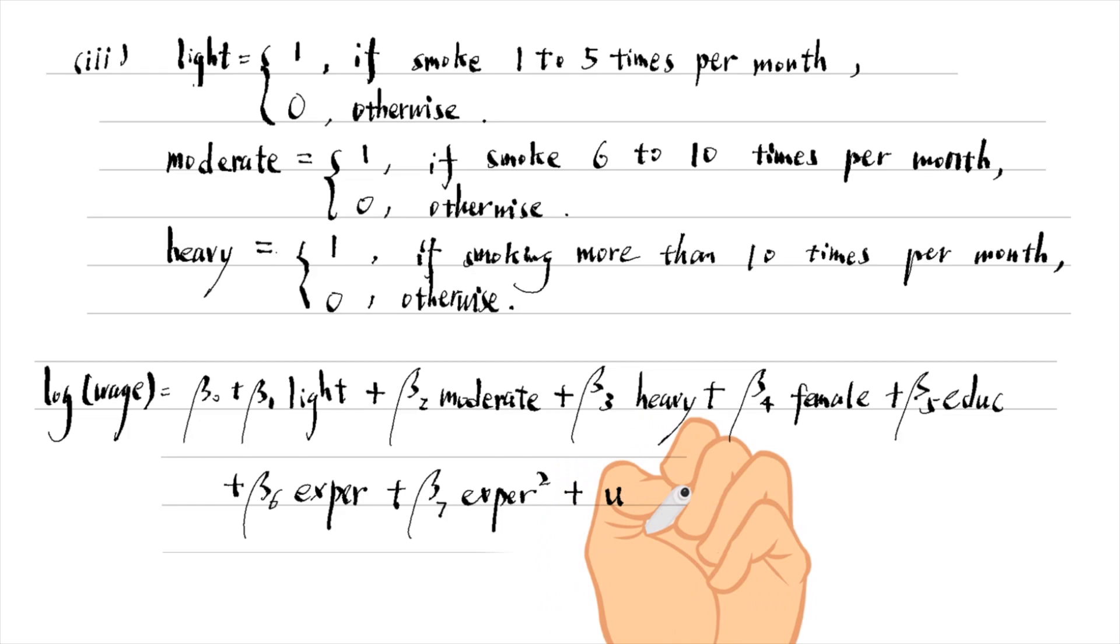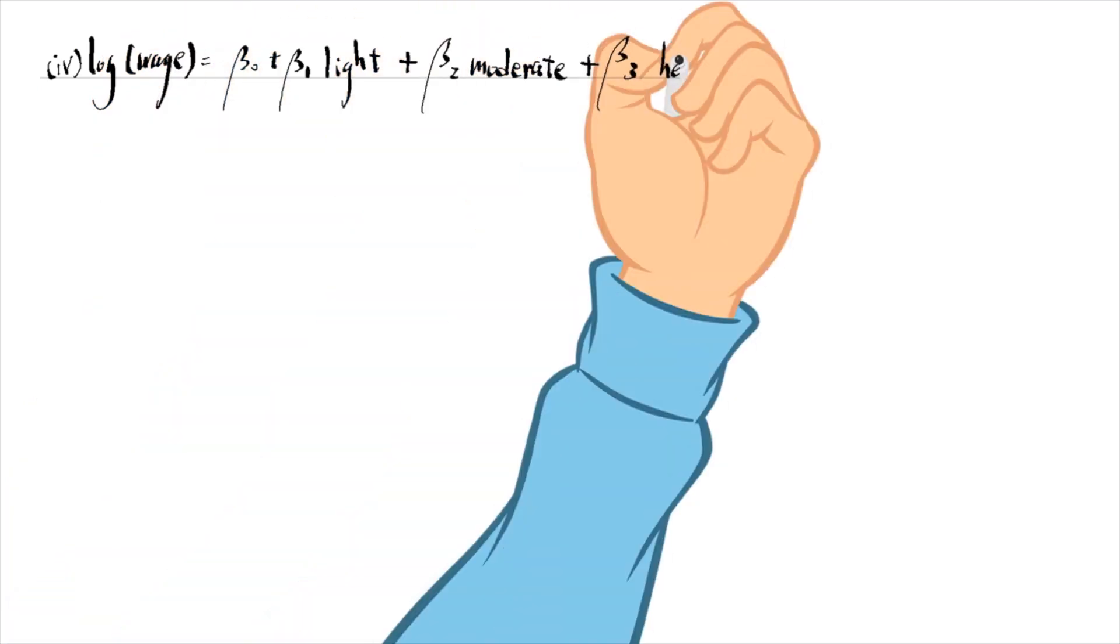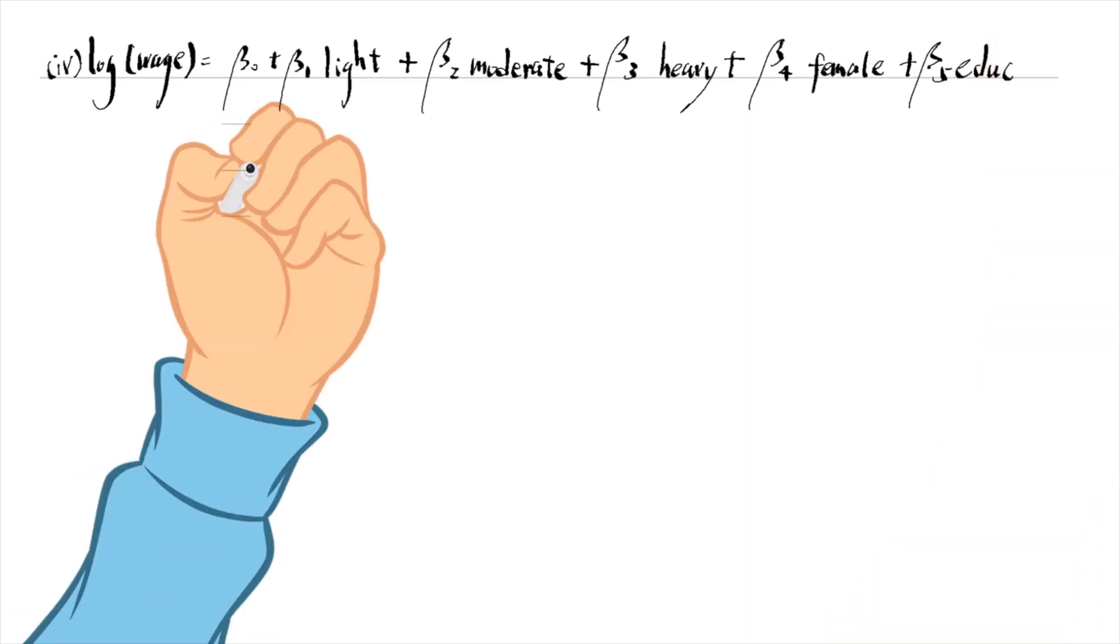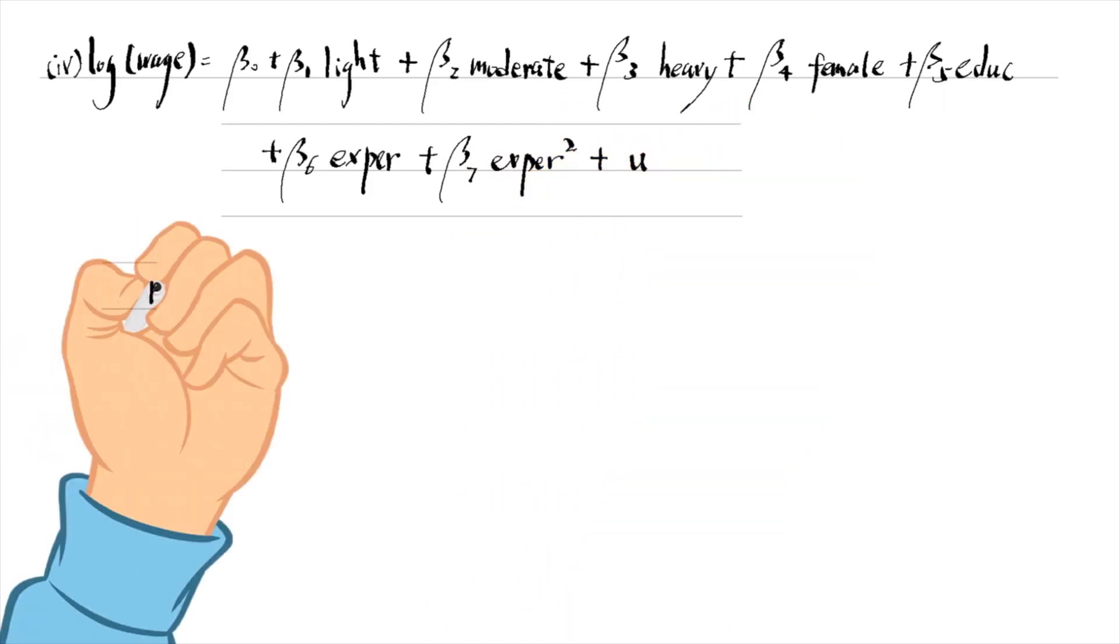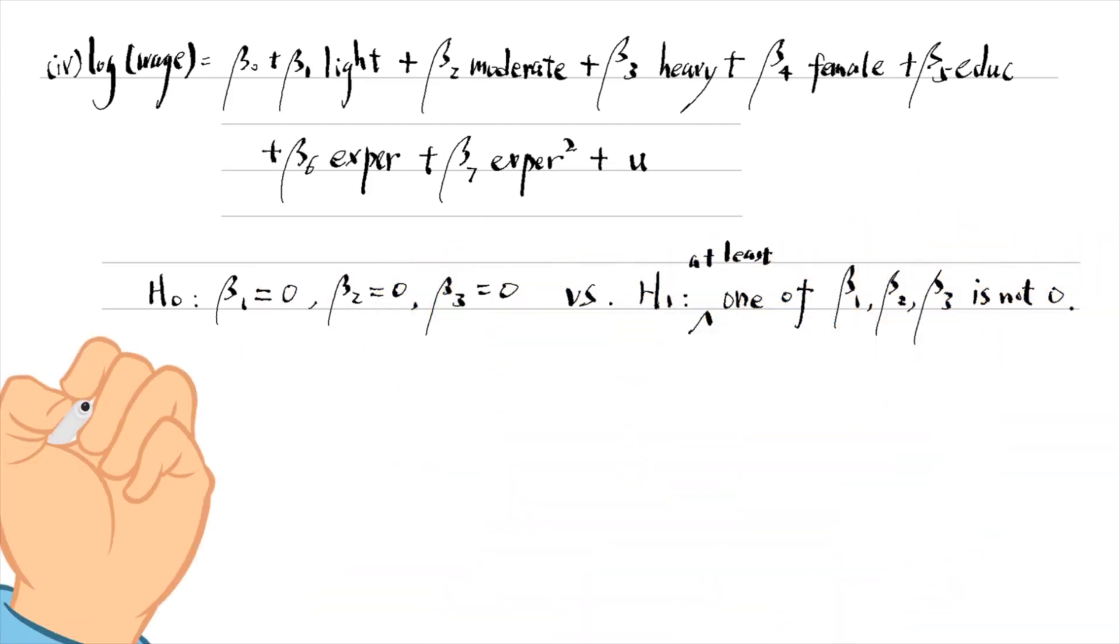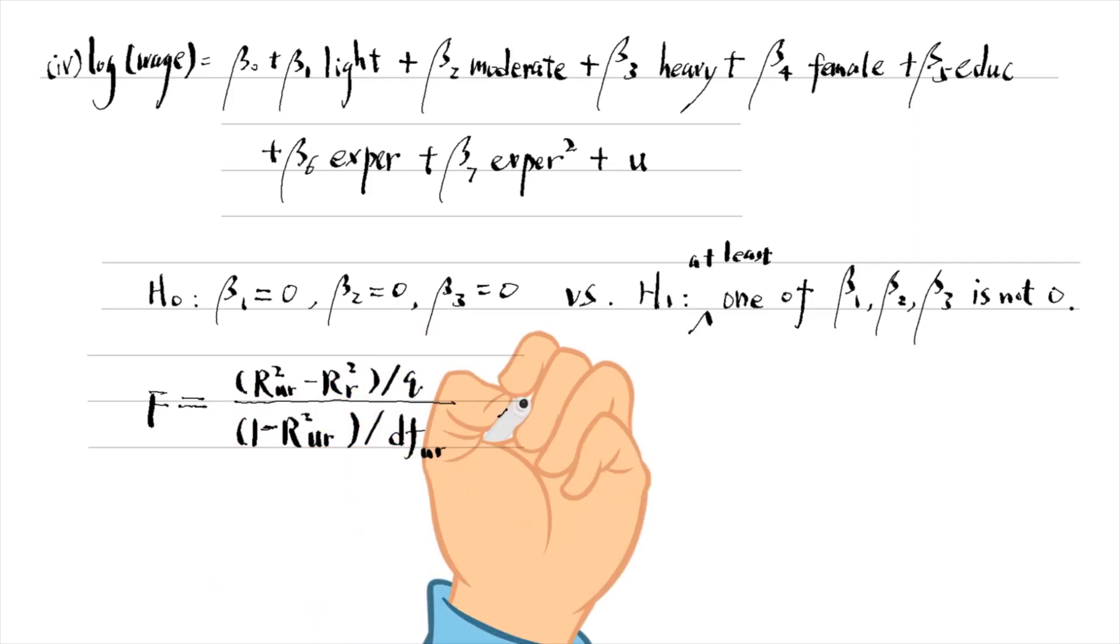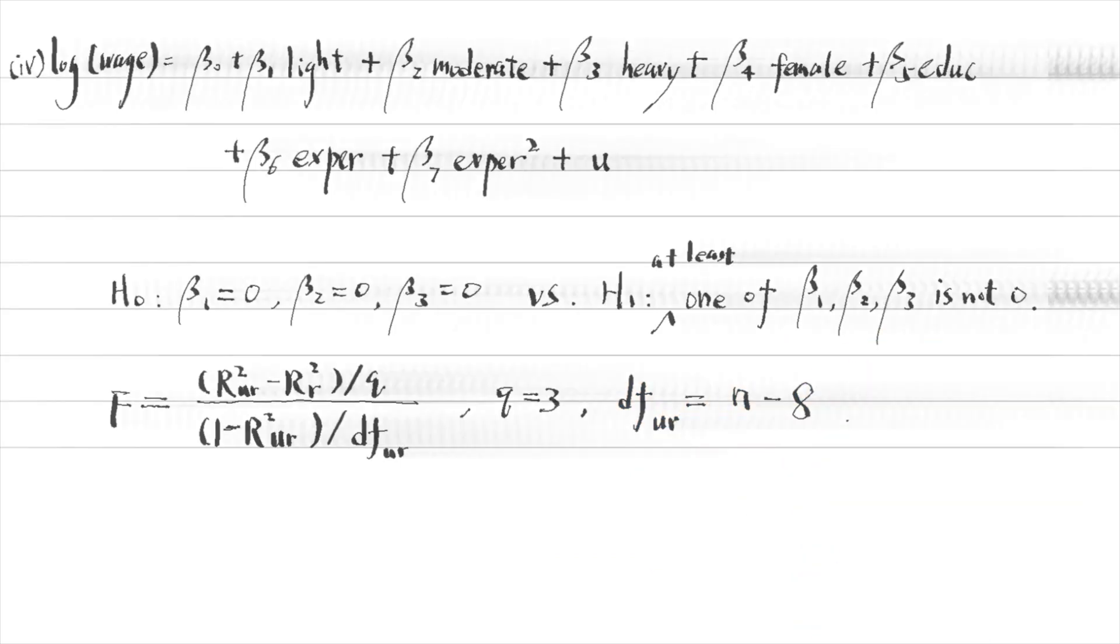The parameters beta 1, beta 2, and beta 3 measure the difference in log wage between the corresponding group and the base group. In part 4, the null hypothesis that marijuana usage has no effect on wage is that beta 1 equals 0, beta 2 equals 0, and beta 3 equals 0. The alternative hypothesis is that at least 1 of beta 1, beta 2, and beta 3 is not 0. The number of restrictions is 3, so in the F-statistic formula, Q is 3. And the degree of freedom in the unrestricted model is the sample size minus the number of estimates and minus 8.